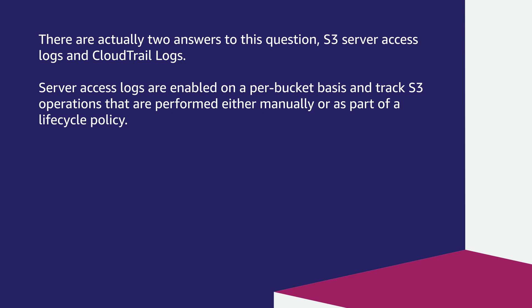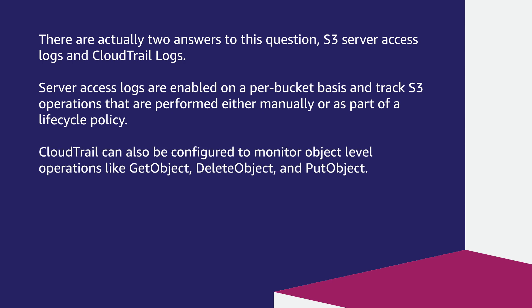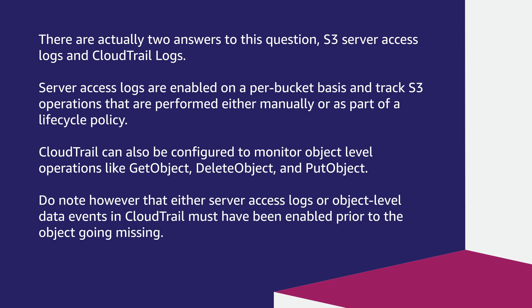Server access logs are enabled on a per-bucket basis and track S3 operations that are performed either manually or as part of a lifecycle policy. CloudTrail can also be configured to monitor object-level operations like get object, delete object, and put object. Do note, however, that either server access logs or object-level data events in CloudTrail must have been enabled prior to the object going missing.